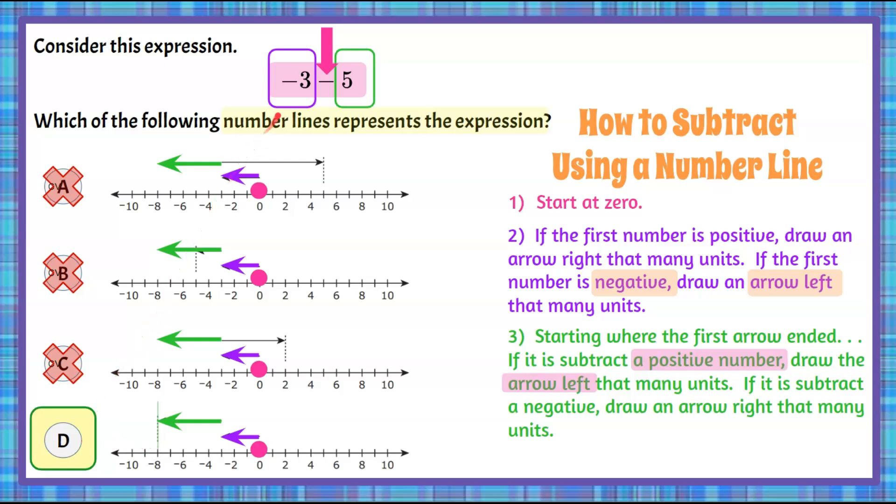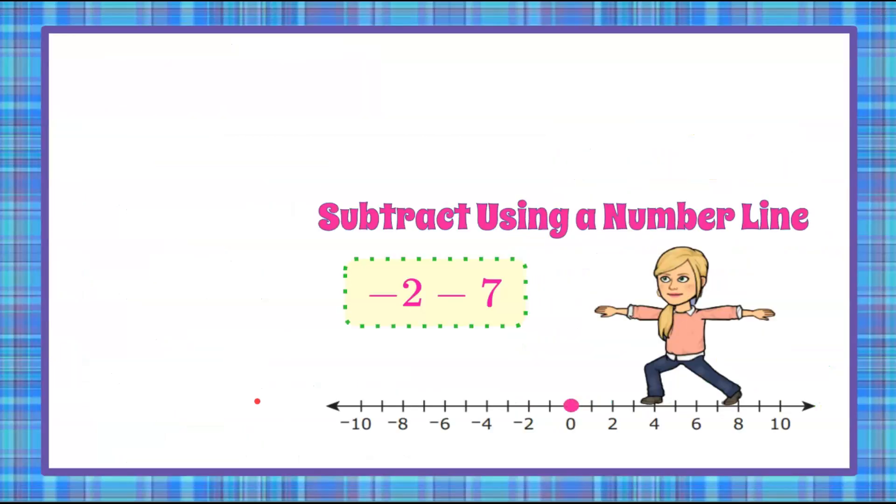So that is the number line that represents negative three subtract five, which is negative three add the opposite. So negative three add negative five is indeed negative eight. Answer choice D. So that is how we subtract using a number line.